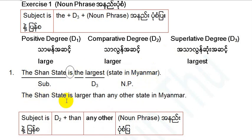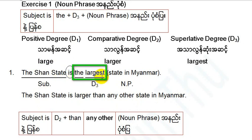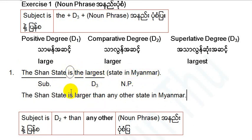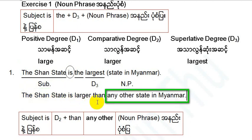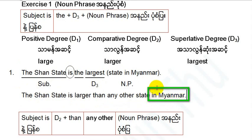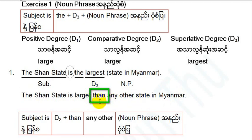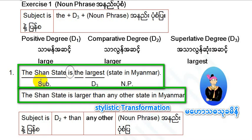The SNAP is larger than any other state in Myanmar. The SNAP is the largest state in Myanmar. After D2, SNAP has more. The SNAP is larger than any other state in Myanmar — then the muscle. The larger body is more than the muscle. This is the style of stylistic transformation.